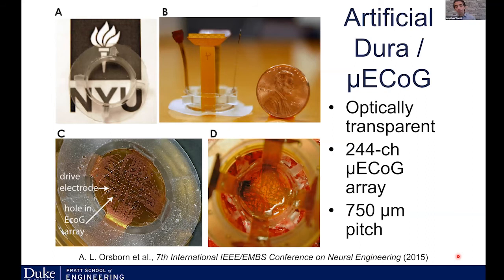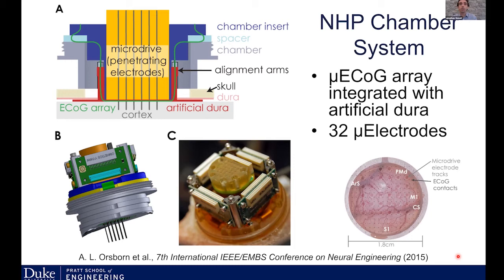We mold our micro-ECoG arrays into an artificial dura made out of silicone, which is optically transparent and allows us to implant our electrodes through a cranial window system with our collaborator Bijan Pesaran. This allows us to test new electrodes in an animal implant without sacrificing an animal for every device we want to test. We can replace electrodes through this artificial dura in a matter of a day, maintain optical access to see the brain underneath transparent arrays, and we incorporated mounting hardware for a micro-drive of penetrating electrodes that can record simultaneously from in the cortex as well as from hundreds of surface electrodes.